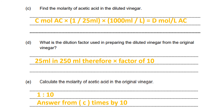To calculate the moles of acetic acid in the original vinegar: since the dilution factor is 1 to 10, we multiply the moles of acetic acid calculated in the previous part by 10 to get the moles in the original vinegar.